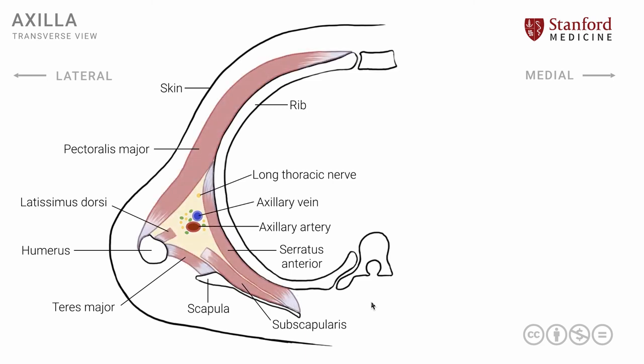Thus we find that the axilla is a roughly pyramidal shaped space. In transverse section it has a triangular outline, formed by three boundaries — anterior, medial, and posterior — and filled with these structures in the substance of the axilla.